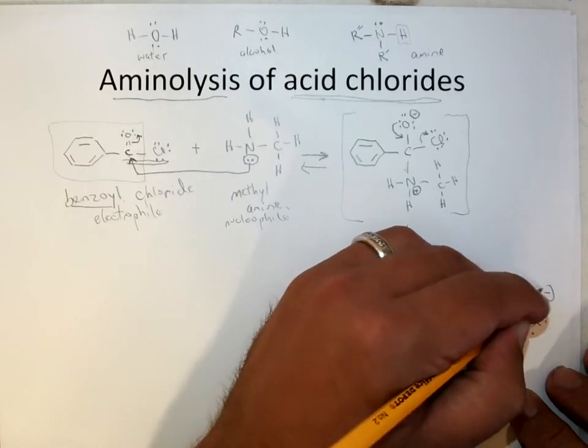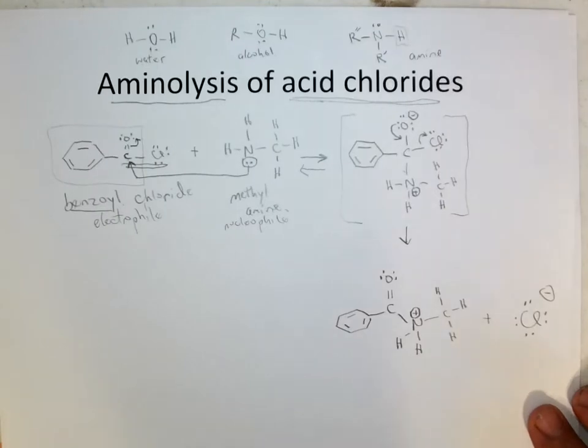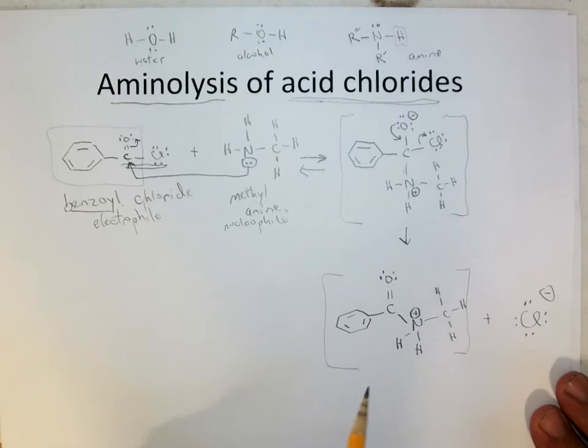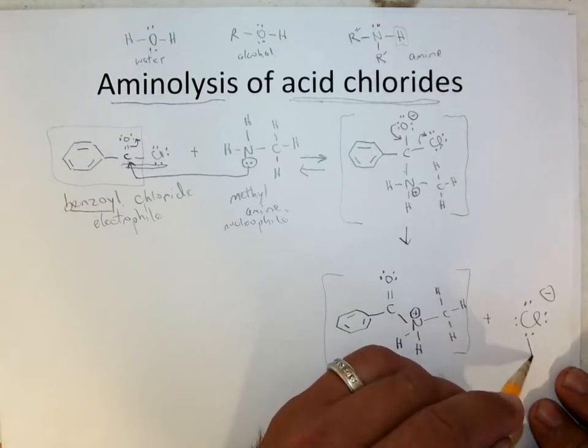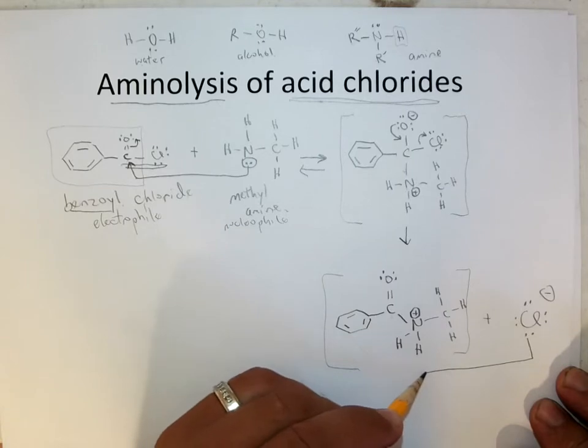And ammonium can be deprotonated by a base. So then you have a new intermediate after the chloride leaves with the carbonyl in it. This looks like protonated amide if you're familiar with amides. You're probably not yet, but you will be.